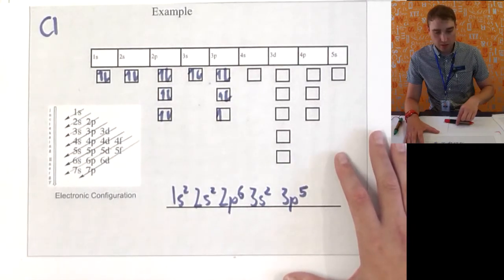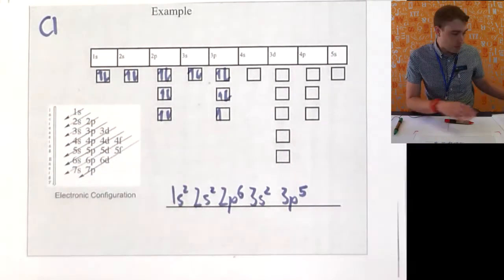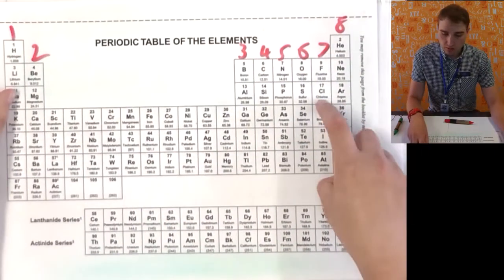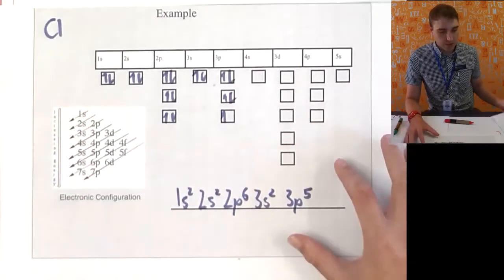Let's look at another example. Look at chlorine. Chlorine, number 17 on the periodic table. So, I need to put in 17 electrons.